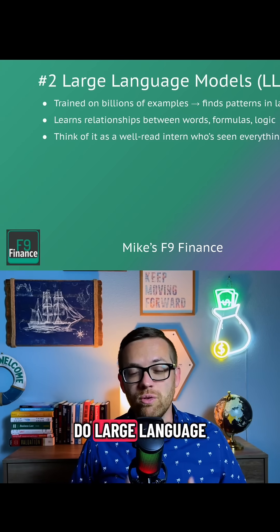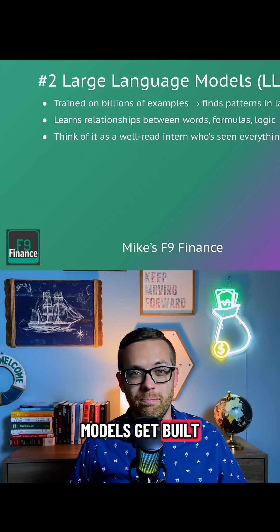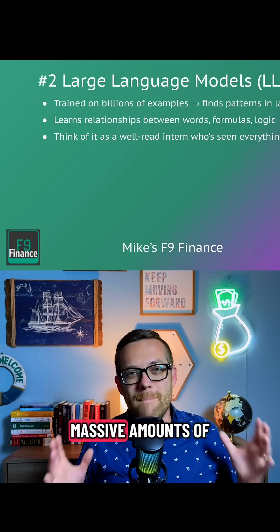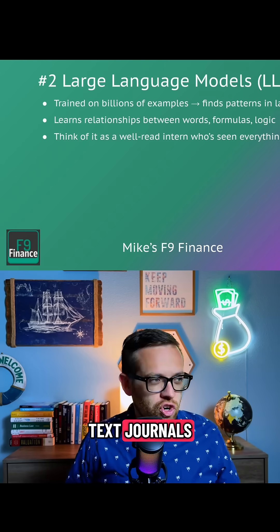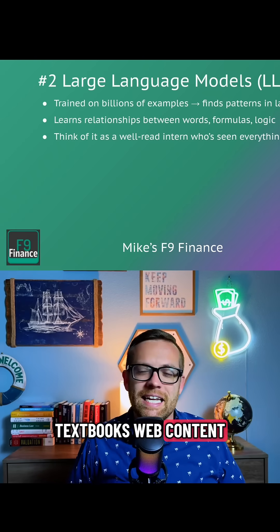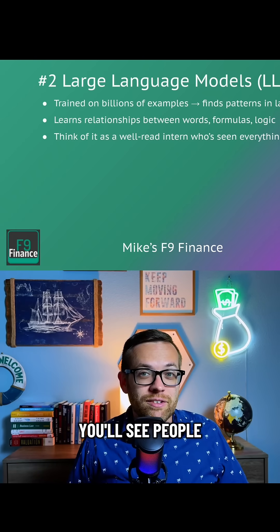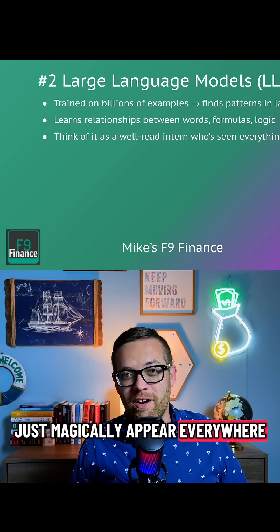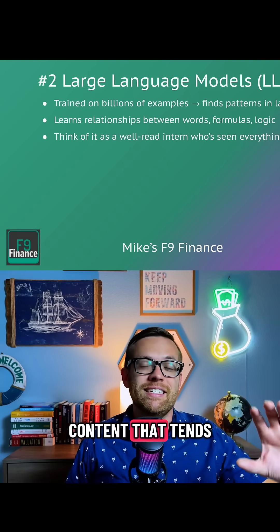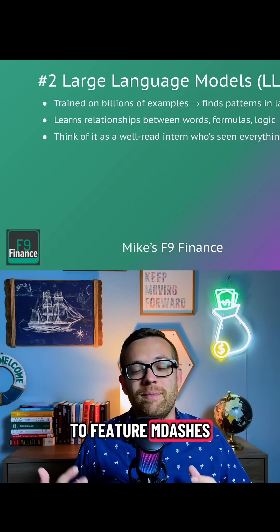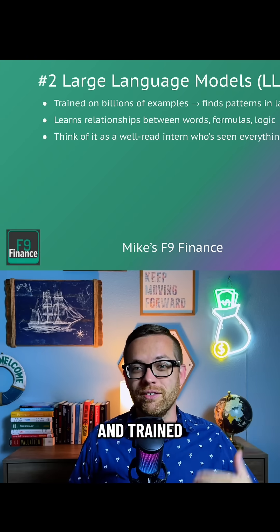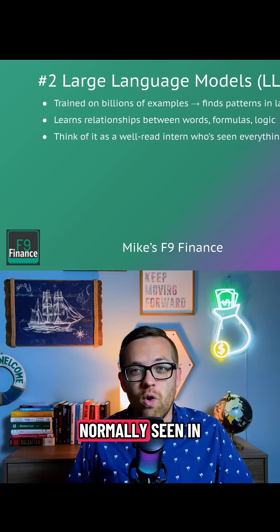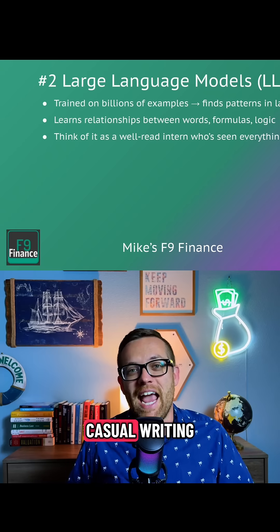So how do large language models get built? First, engineers feed the model with massive amounts of text — journals, textbooks, web content. That's often why you'll see people joke that em dashes just magically appear everywhere. So much academic content that tends to feature em dashes has been fed into these models, and it just starts to replicate something not normally seen in casual writing.